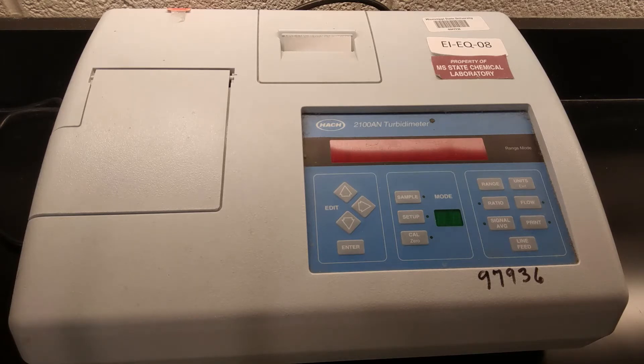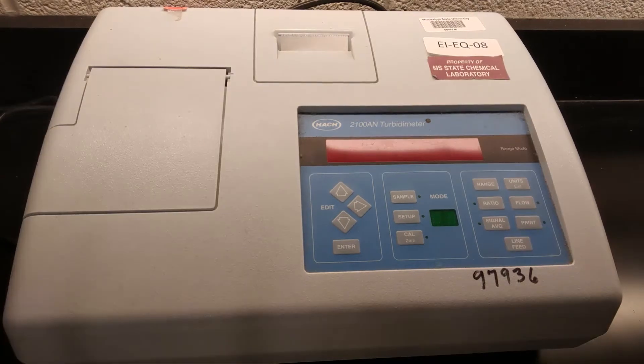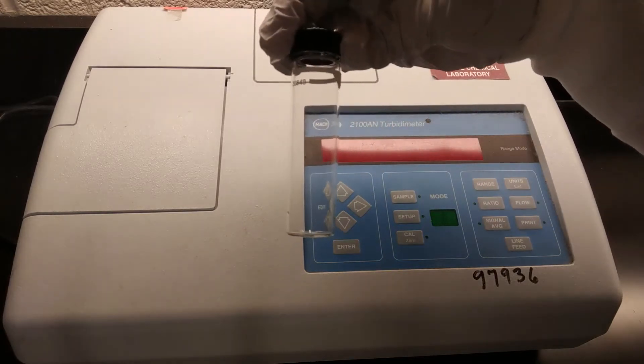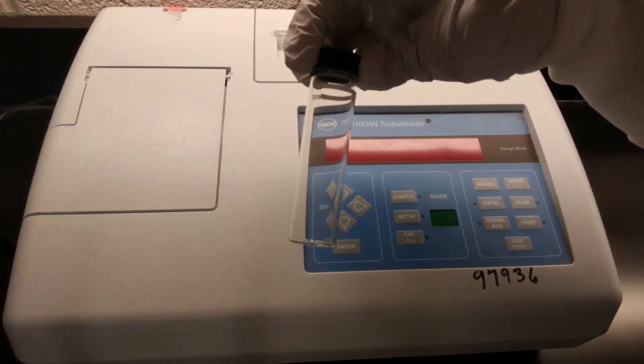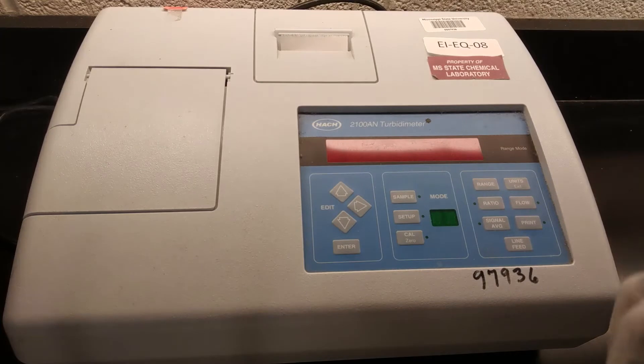Most of our supplies for our turbidimeter are kept in the drawer just underneath it, so we have everything that you need for it right down next to where the station is. Among the supplies that we have for this are our sample cells, which are glass or quartz vials that look like that.